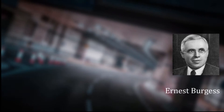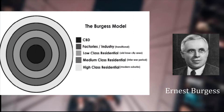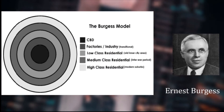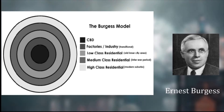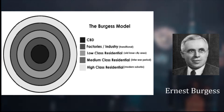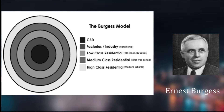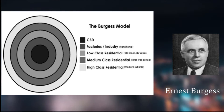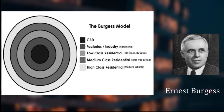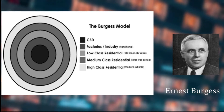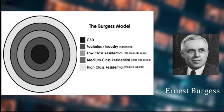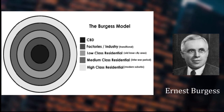The Burgess Concentric Model was created in 1925, in which land value and social class with housing increased with distance from the city center. It was assumed that many people would migrate into inner city areas where housing was cheapest and closest to work. However, this model is too basic and unrealistic — it was based on Chicago in the 1920s, so today there are no cities which follow this model.